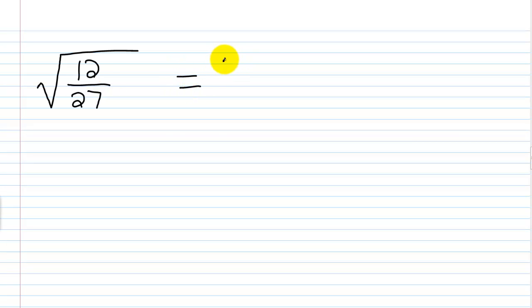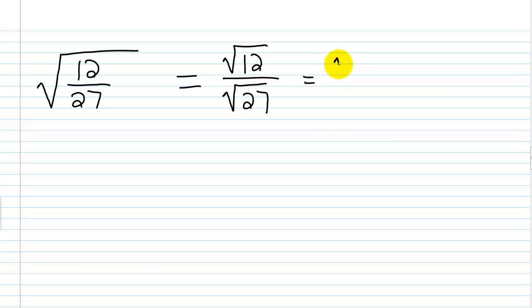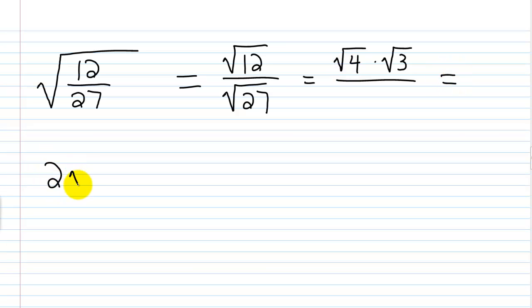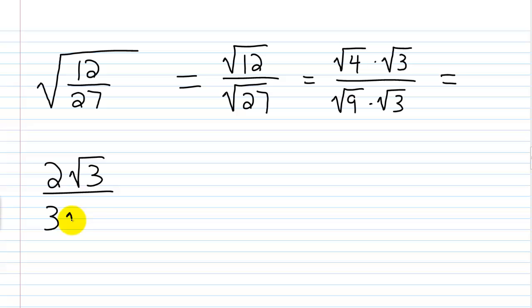What about the square root of 12 over 27? I'll break it up into square root of 12 over square root of 27. In the numerator, 12 is 4 times 3, so I write it as square root of 4 times square root of 3. Since 4 is a perfect square, that becomes 2 times square root of 3. Square root of 27 is square root of 9 times square root of 3, and square root of 9 is 3, giving 3 times square root of 3. Square root of 3 over square root of 3 cancels, and I'm left with just 2 thirds.